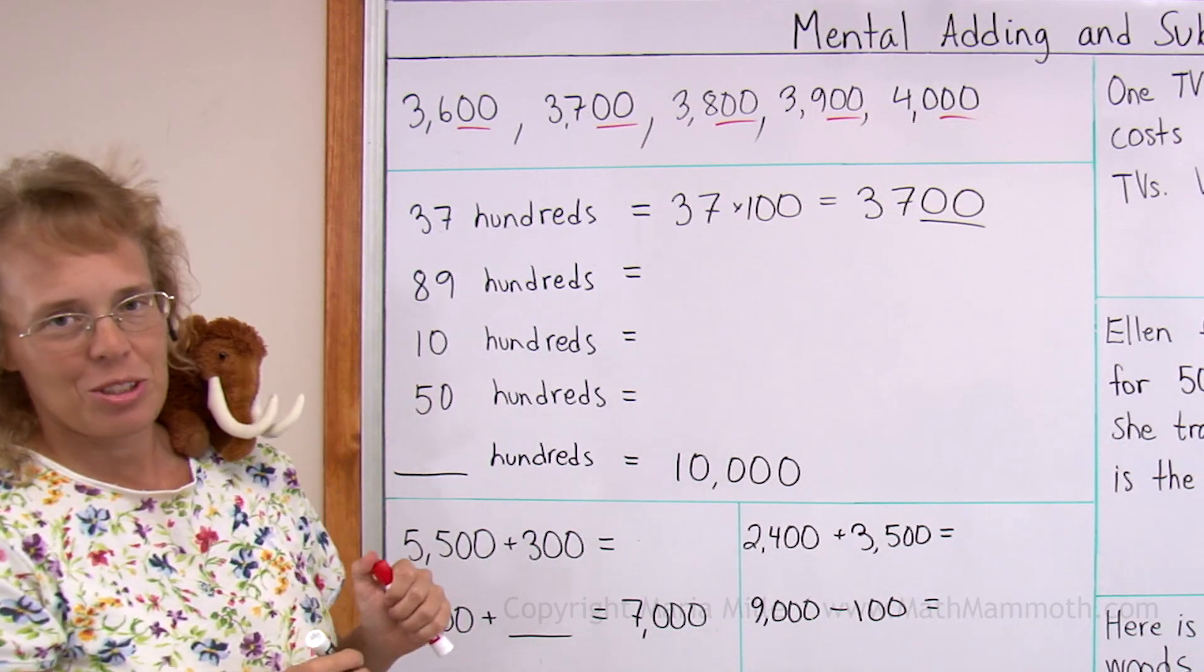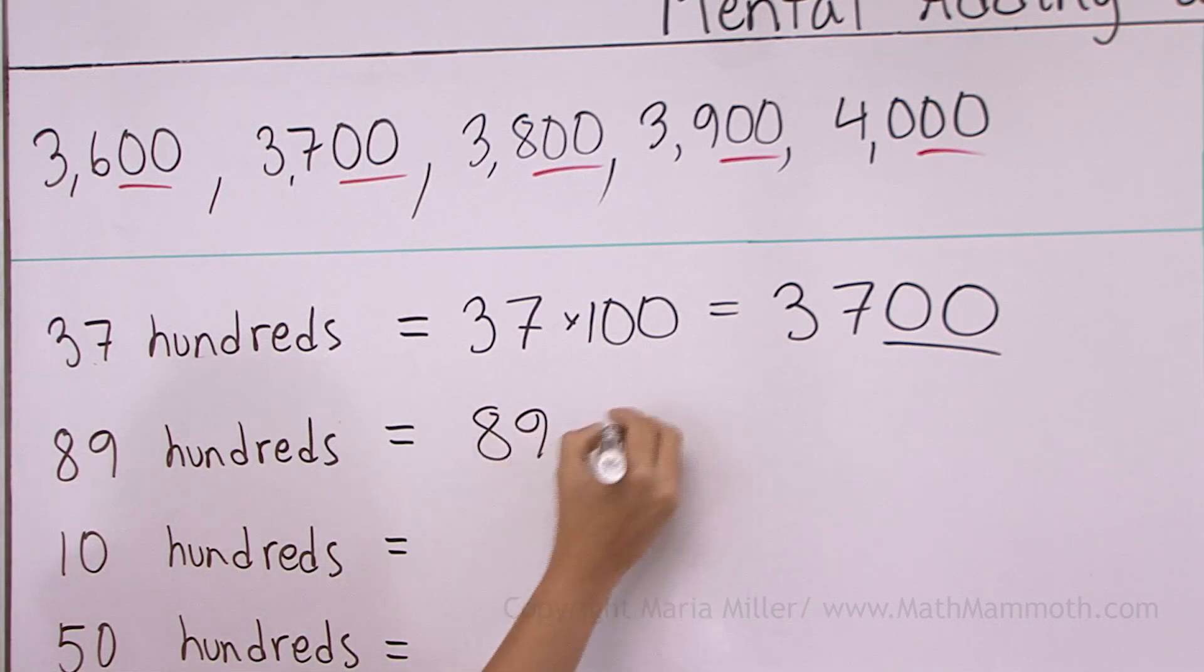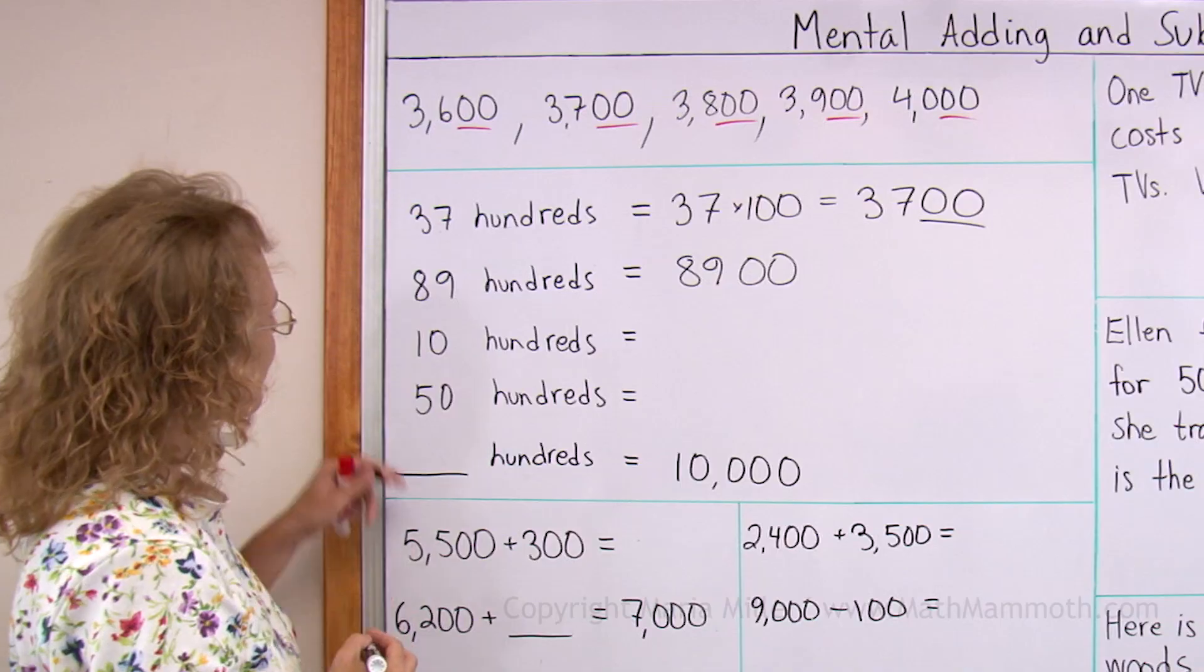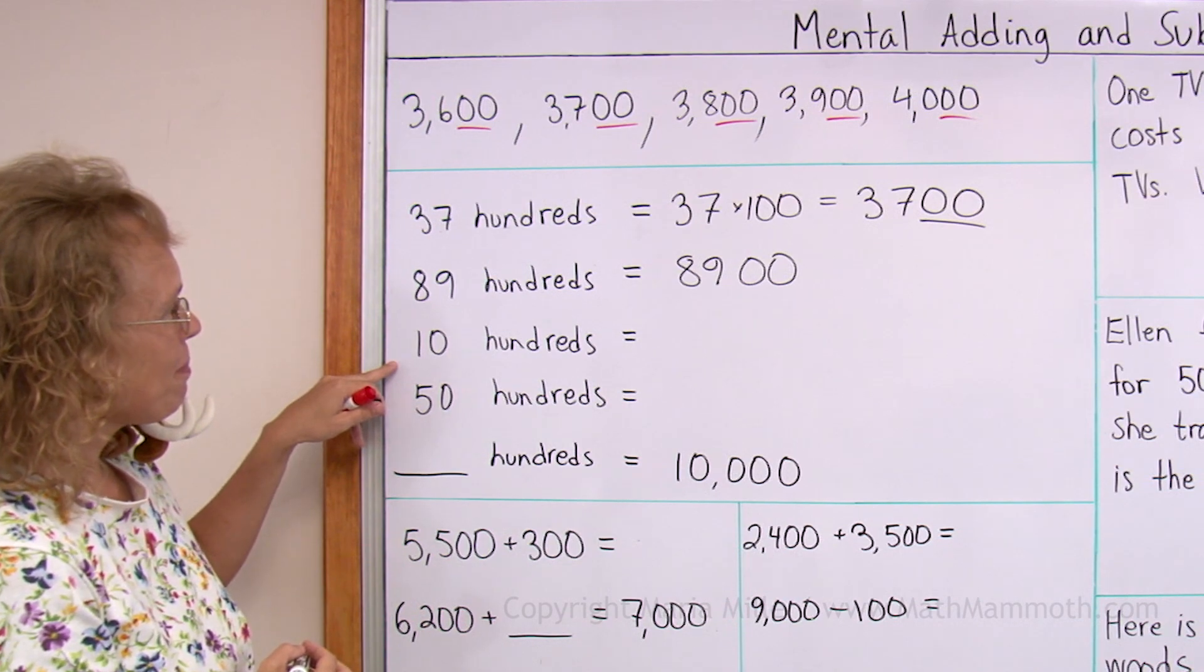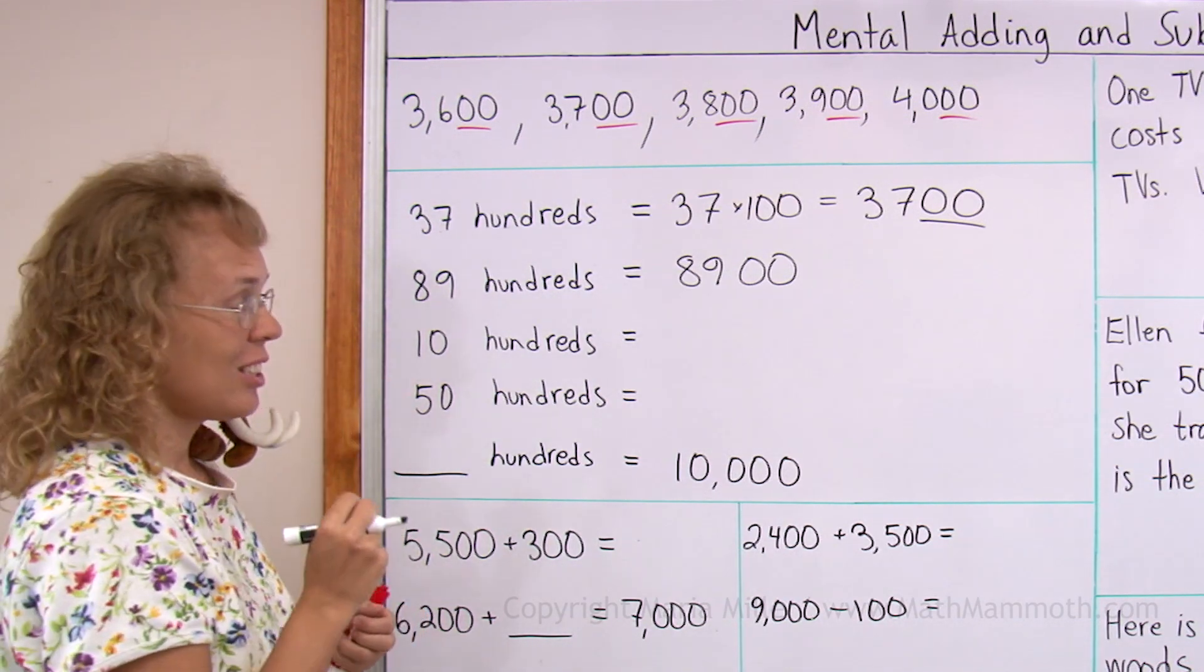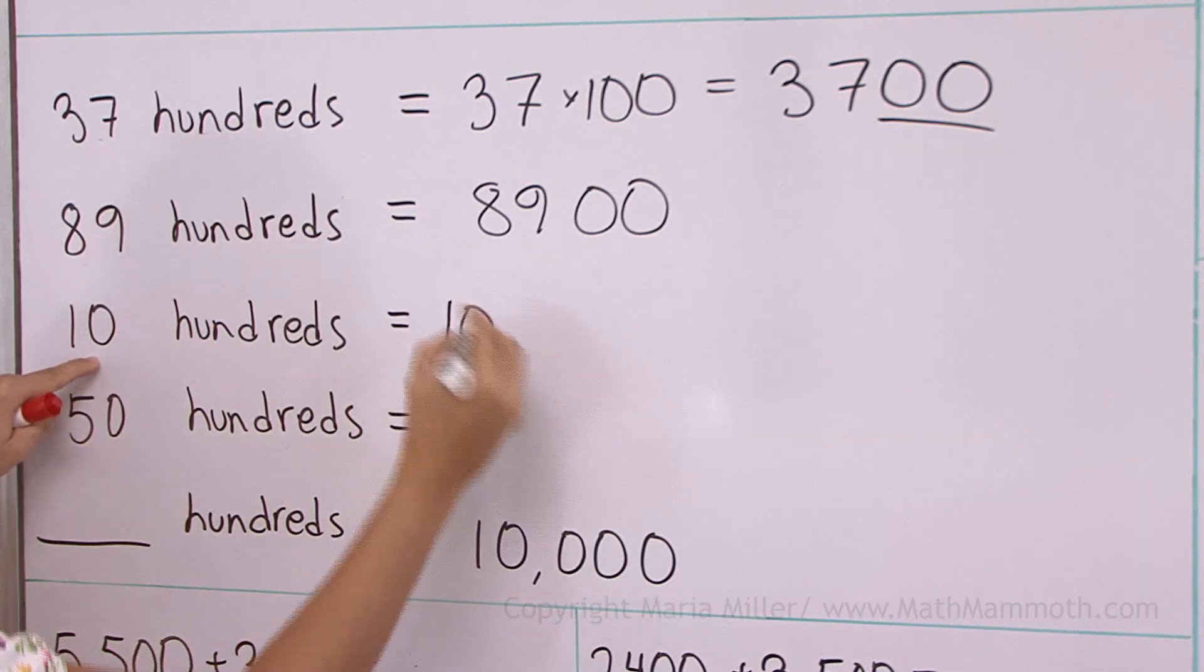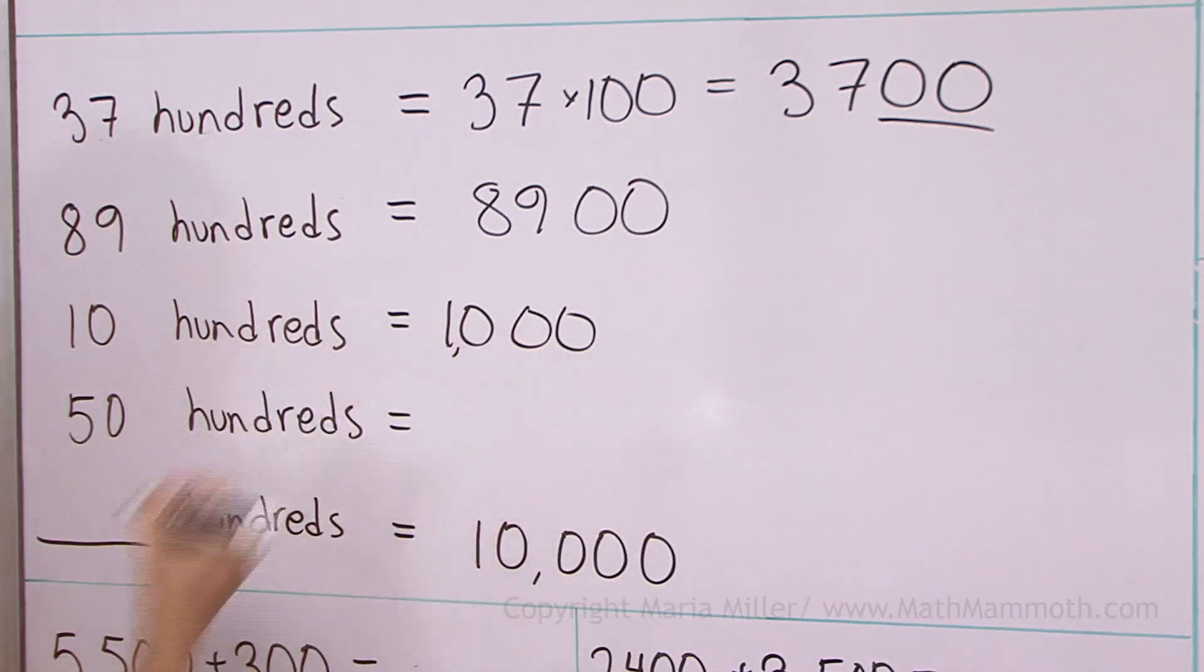How about 89 hundreds? Just write 89 and two zeros. So it is 8900. Ten hundreds, we studied that just a little bit ago. That's 1000, right? But you can also take 10 and then two zeros. So you get 1000.